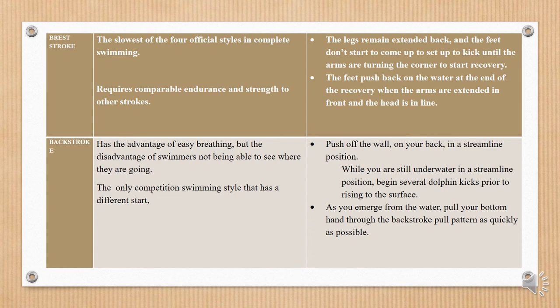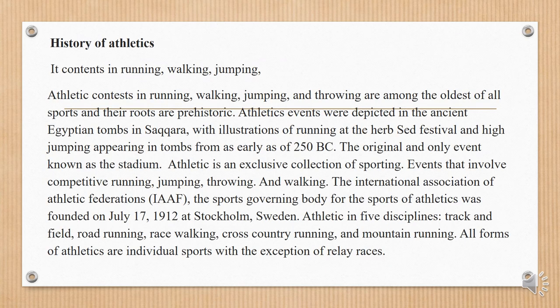Backstroke has the advantage of easy breathing but the disadvantage of swimmers not being able to see where they are going. It is the only competitive swimming style that has a different start. Procedure: push off the wall on your back in a streamlined position. While still underwater in a streamlined position, begin several dolphin kicks prior to rising to the surface. As you emerge from the water, pull your bottom hand through the backstroke pull pattern as quickly as possible.